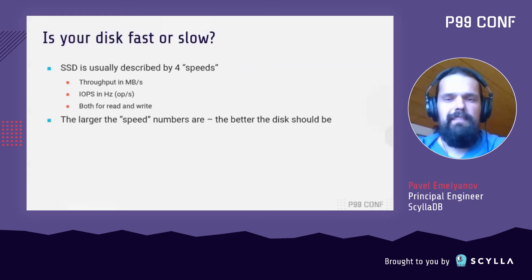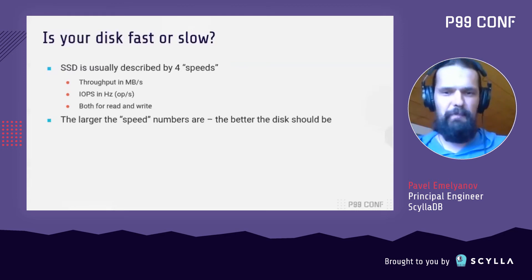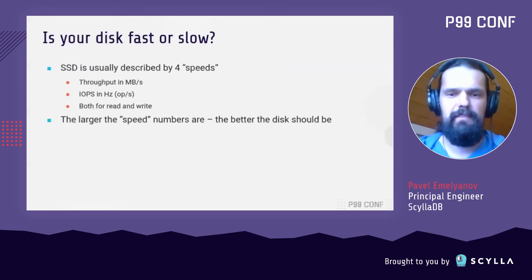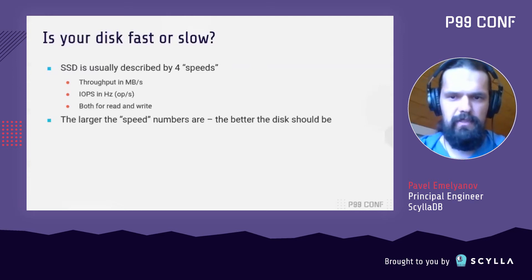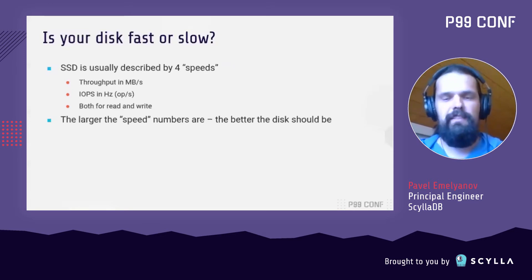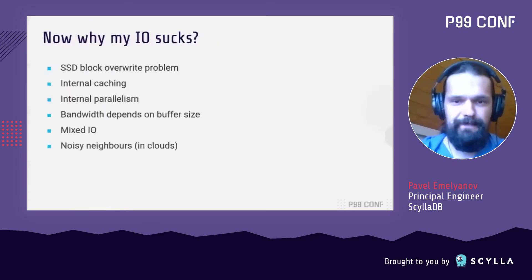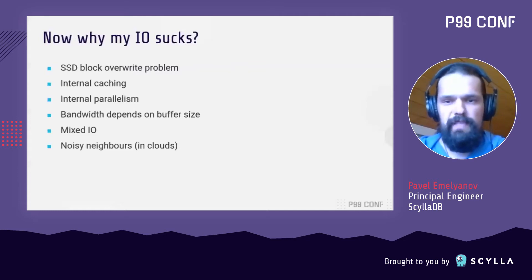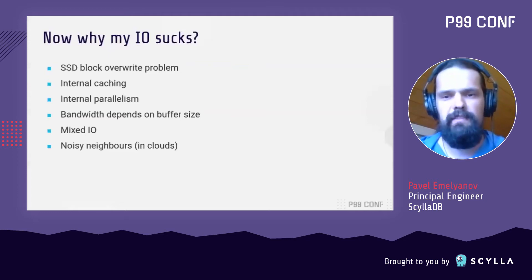But now let's take a closer look at an imaginary SSD we're going to work with. Other than the disk capacity itself, there are four of the most important numbers about the disk: its speed. This speed has four components — two throughputs and two IOPS, both for reading and for writing. The larger these numbers are, the faster the disk is, right? Well, actually not quite, and here's why. The trick is that those four speeds are those measured with perfectly prepared IO under perfectly selected conditions.